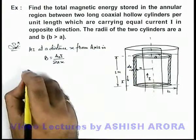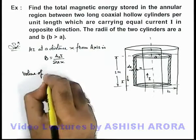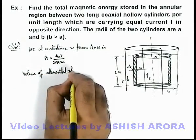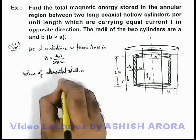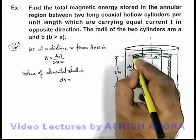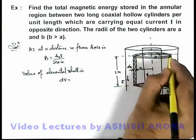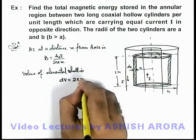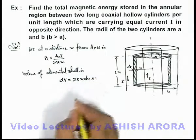Here also we can calculate the volume of the elemental shell. This can be written as dV, its surface area at the top we can write as 2πx dx and its length is 1, so the volume is 2πx dx multiplied by 1.